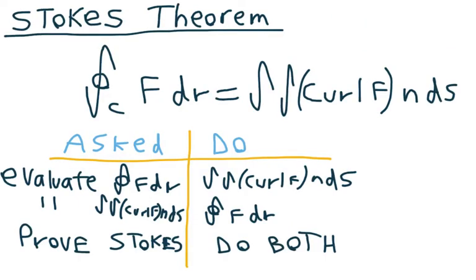So for Stokes' theorem, what it states is that the closed integral of f·dr is equal to the double integral of the curl of f times n times ds.